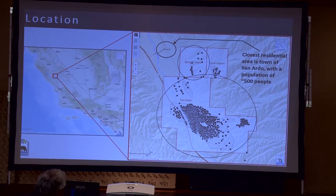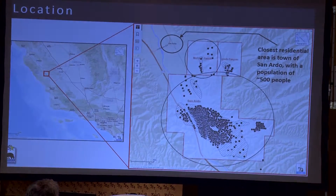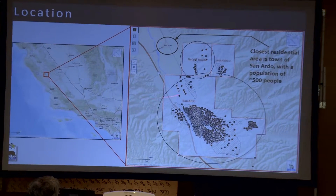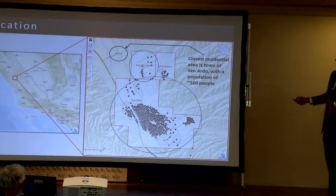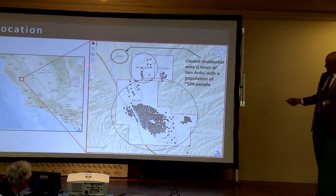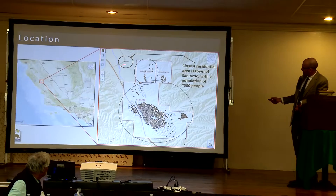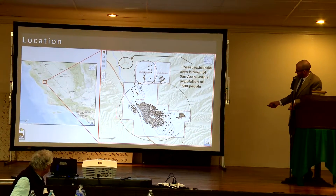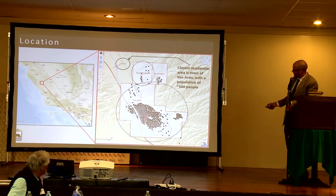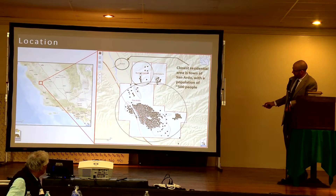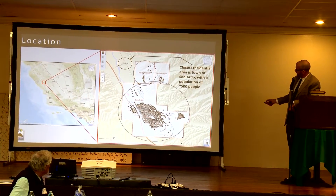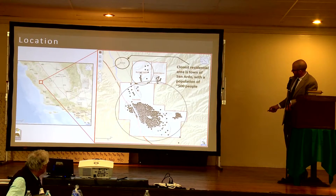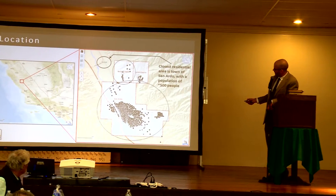First, let's take a look at the location. Many of you are familiar with this already. Here's the town of San Ardo, about 30 minutes south on the 101 from where we're located right now. Here's the main San Ardo oil field located in the Salinas River Valley. That's the Salinas River there, that light blue line, and the darker red line is the 101.